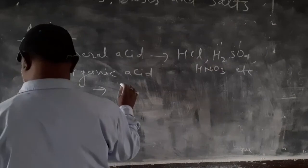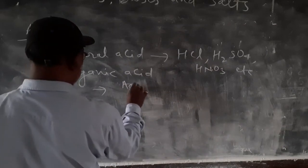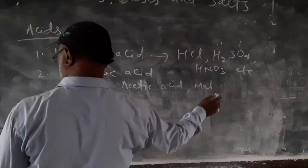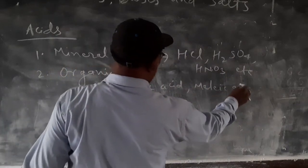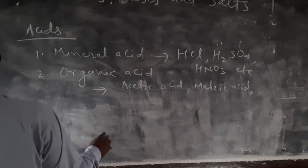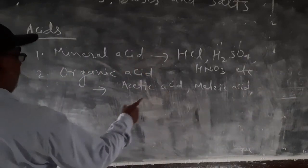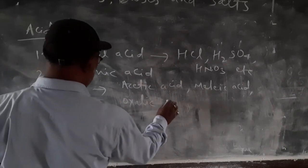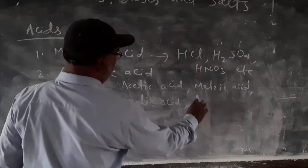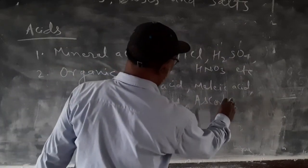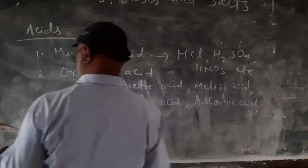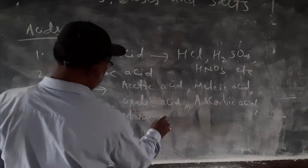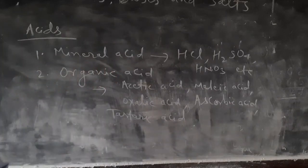Organic acids include acetic acid and malic acid. These are obtained from different natural sources. From apple, you get malic acid. Oxalic acid is from spinach. Ascorbic acid, which is Vitamin C, and tartaric acid - these are organic acids which are obtained from plants or animals.